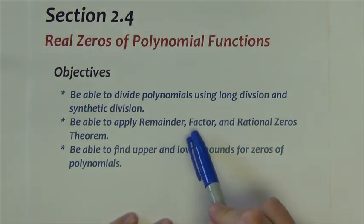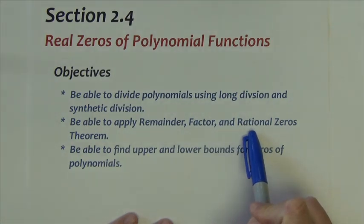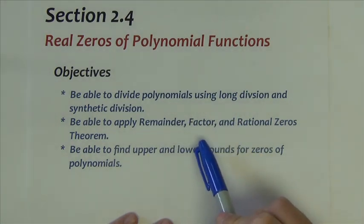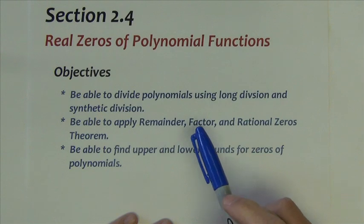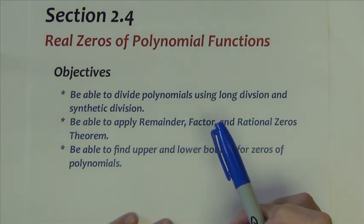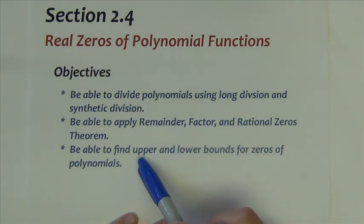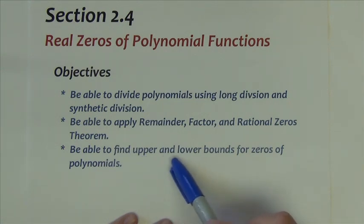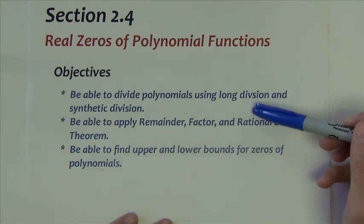We'll go over a couple of theorems, the factor, remainder, and rational zeros theorem, and then we'll begin to use those to find real zeros of polynomial functions. We're not going to do much, if anything at all, with the upper and lower bounds for zeros, so mainly we're going to hit on these first two.